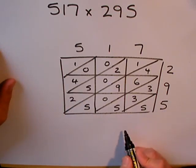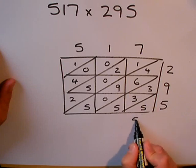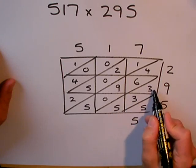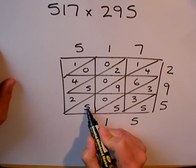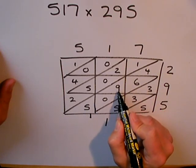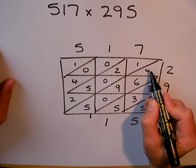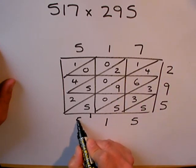Now I can add up along the diagonals. Starting with five. Five, three, and three is 11. So, one down, one to carry. Five and six is 11, plus nine is 20. Four is 24. And the one to carry, 25. Five.